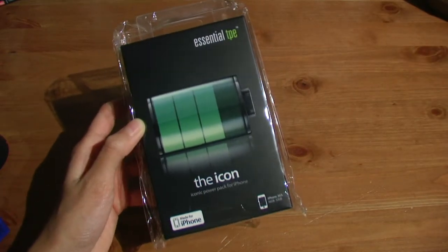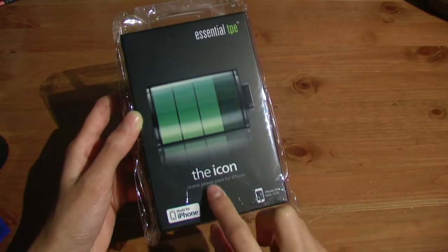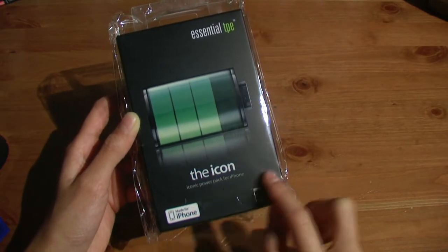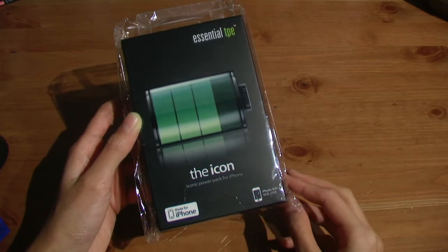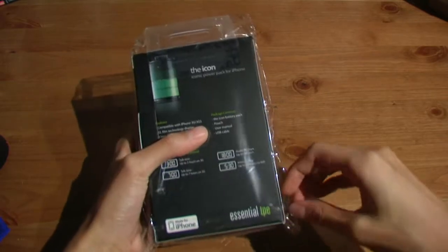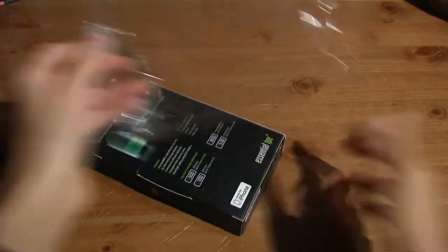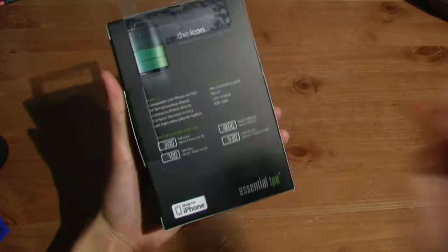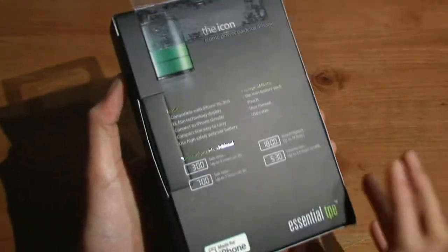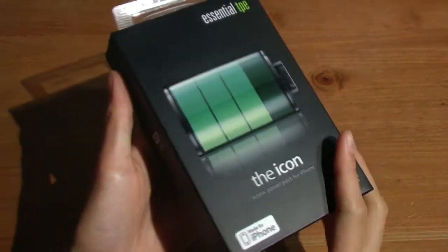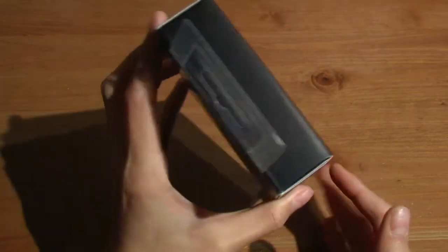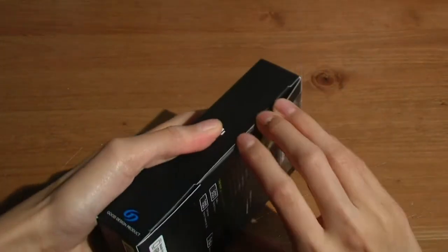So here we got the Essential TPE, which I believe is iPivo, and it's called the Icon, the Ionic Power Pack for the iPhone. All models. Pretty much all devices with the 30-pin connector. It's nicely wrapped up in this plastic bag. As you can see right here on the back, we have specs and whatnot. Packaging looks very nice in general. Let's just go ahead and open this up.